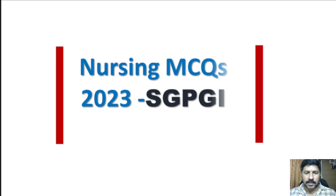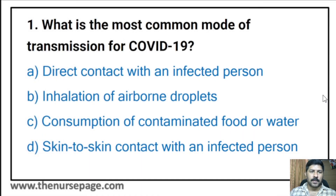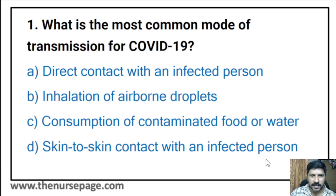Nursing MCQs 2023, helpful for preparing SDP, JMS, and similar exams. First question: What is the most common mode of transmission for COVID-19? Direct contact with an infected person, inhalation of airborne droplets, consumption of contaminated food or water, or skin-to-skin contact? The correct answer is inhalation of airborne droplets.